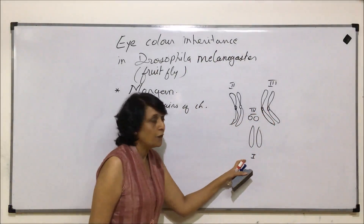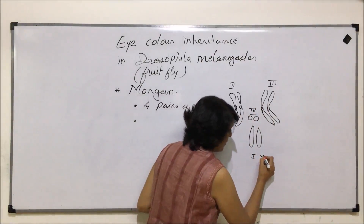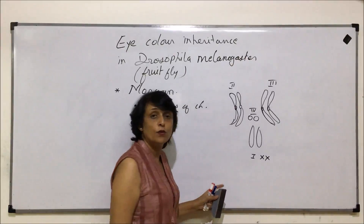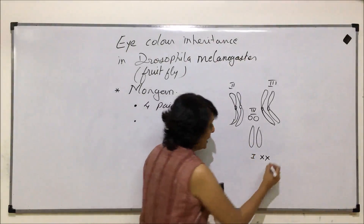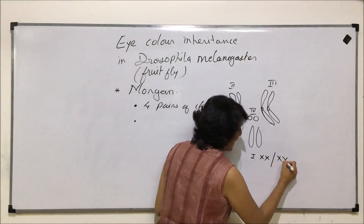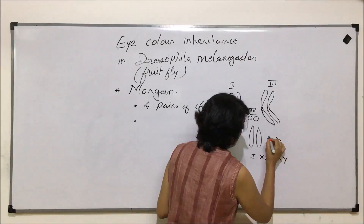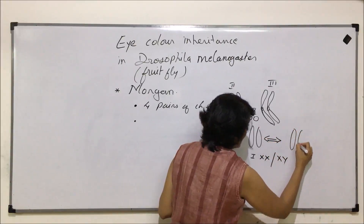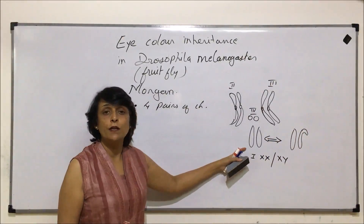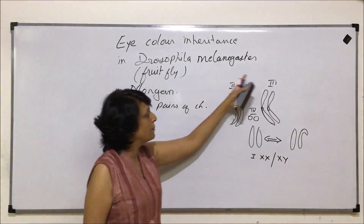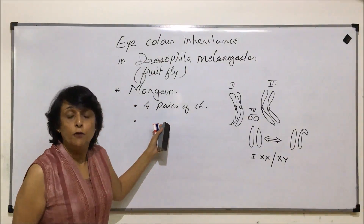The first pair is the sex chromosomes. In a female it is X and X, and in a male it will have X and Y. The Y chromosome is drawn with one arm like X and a shorter arm. The remaining three pairs are autosomes.